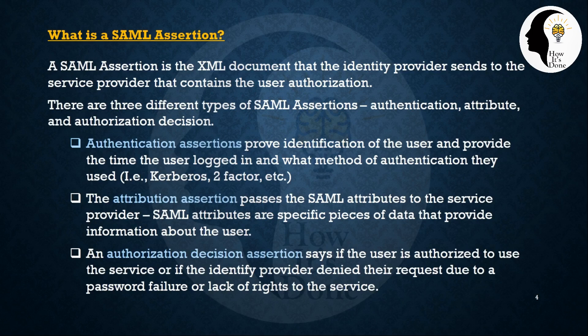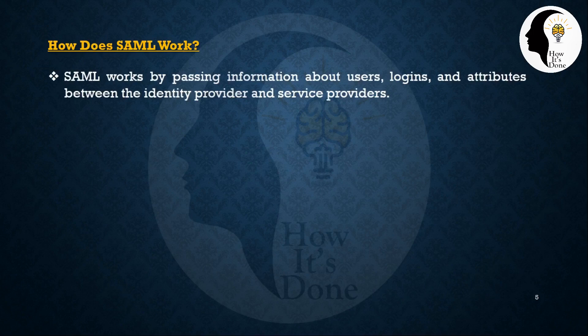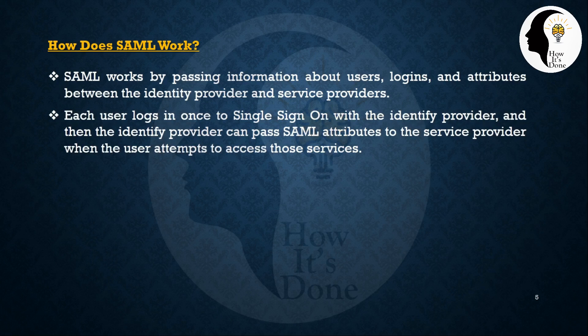How does SAML work? SAML works by passing information about users, logins, and attributes between the identity provider and service provider. If the user logs in once with single sign-on through the identity provider, then the identity provider can pass SAML attributes to the service provider when the user attempts to access those services.